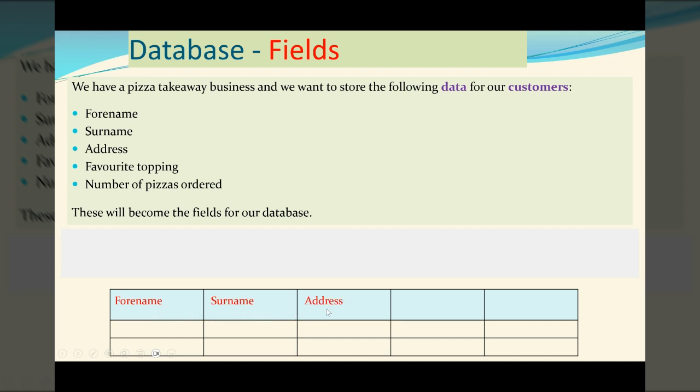And we use them as headings for the top of this table. So we've got forename, surname, address, favorite topping, and number ordered. Now these column headings are the fields. And they set out where the data is going to be stored. So all the forenames will appear underneath the forename field, all the surnames will be in the surname field.